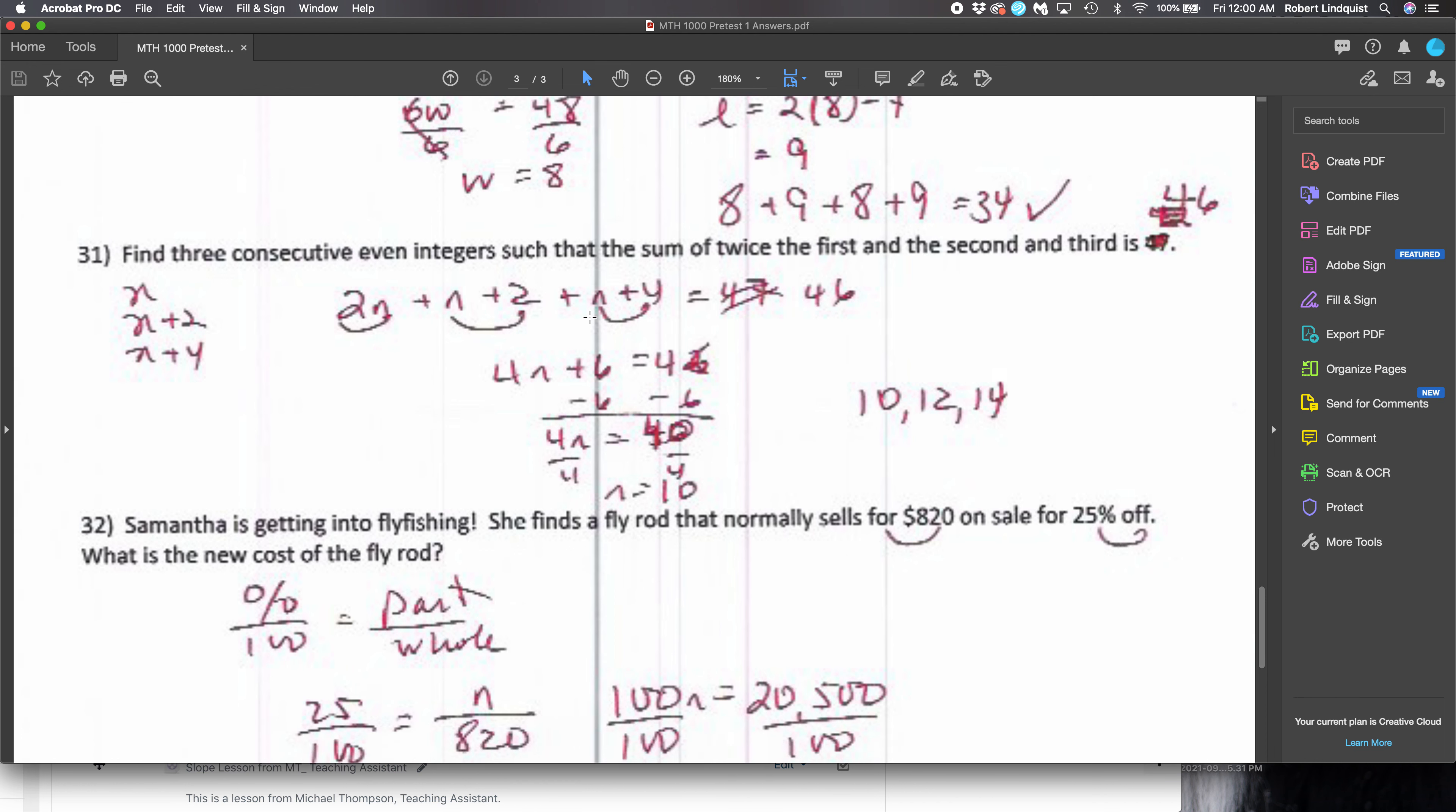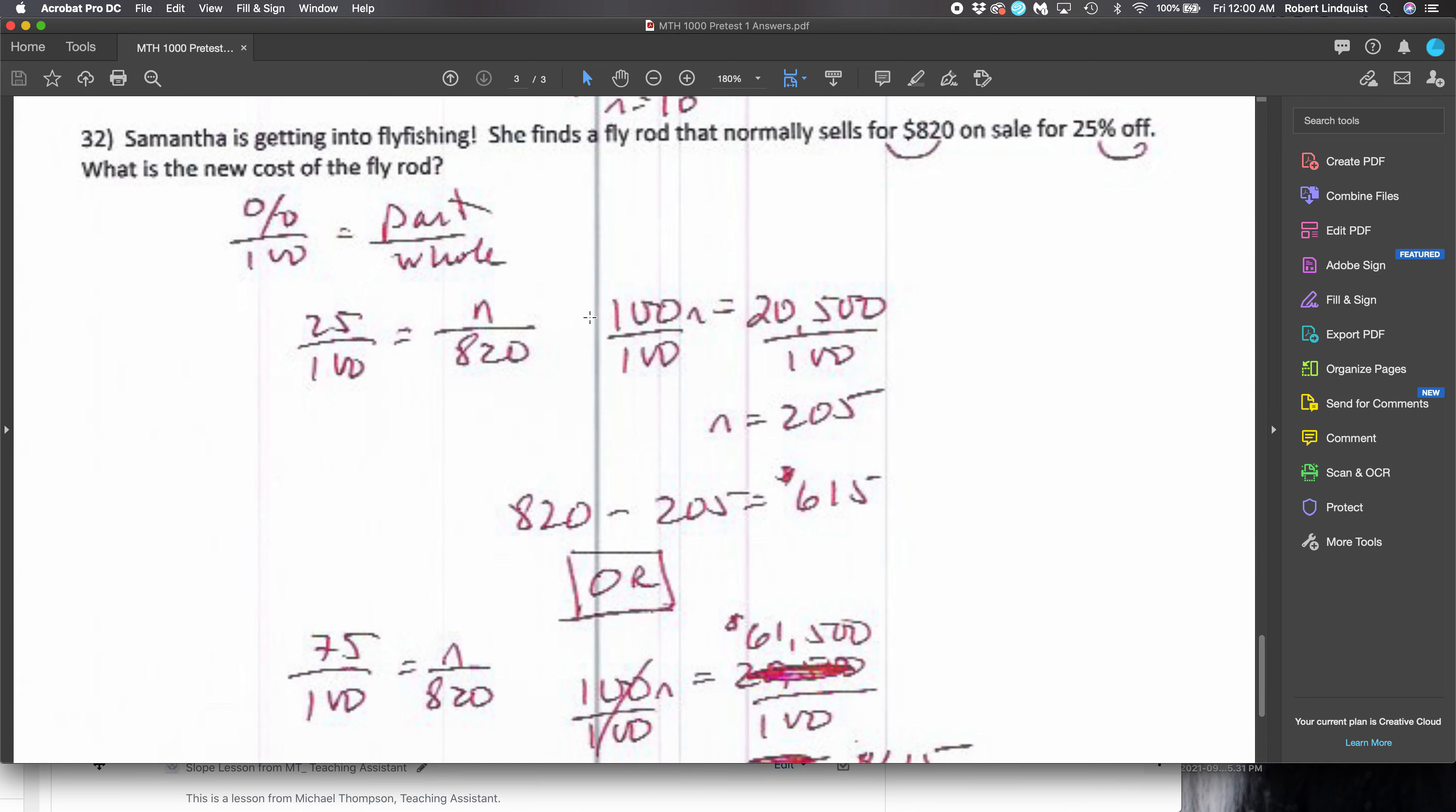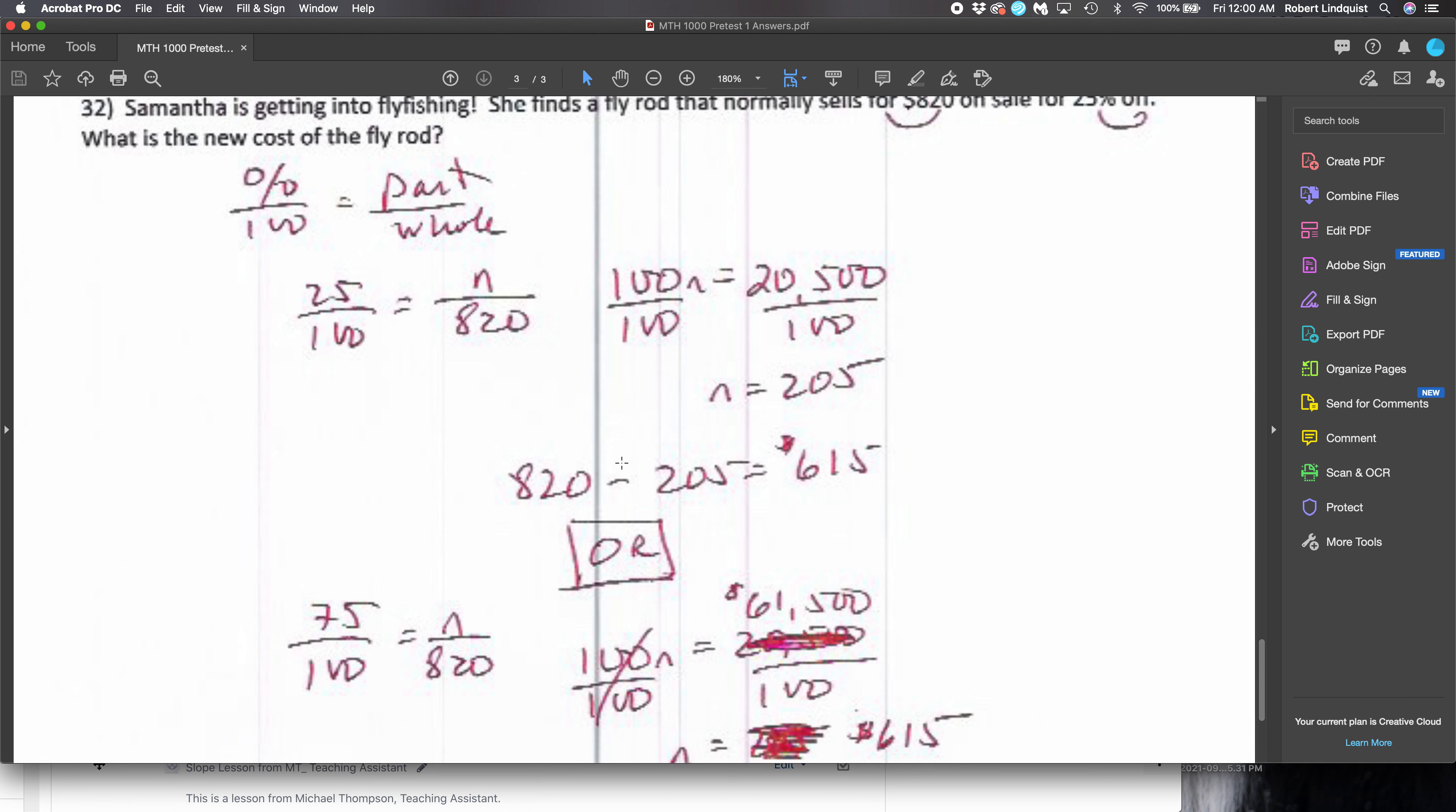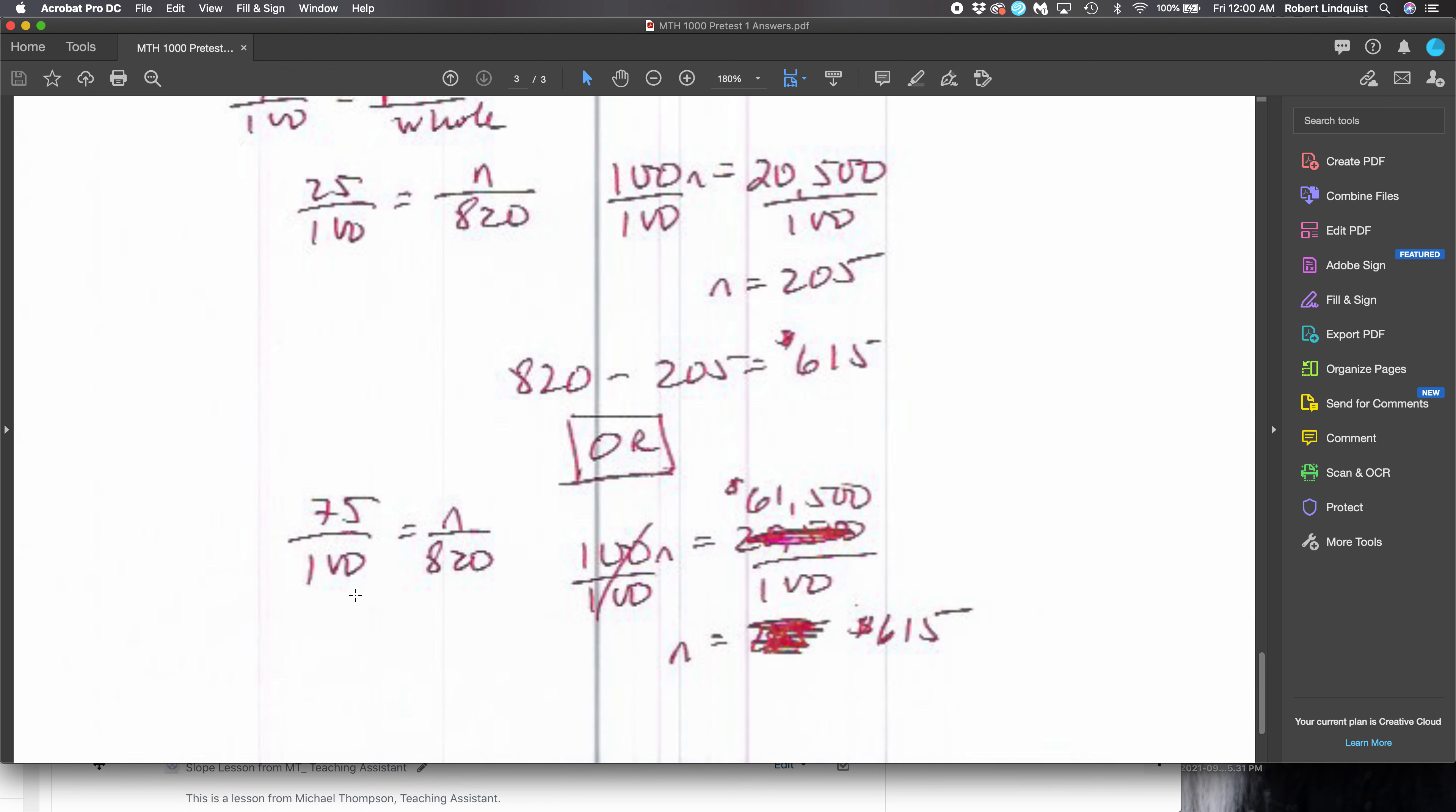And then number 32 done two ways. With number 32 done two ways, I want you to realize that you can find out what the 25% discount is, $205, and then subtract it from the original price. Or you can say, look, if I'm taking 25% off, then 75% is remaining. And if you do that, the correct answer shows up. Okay.